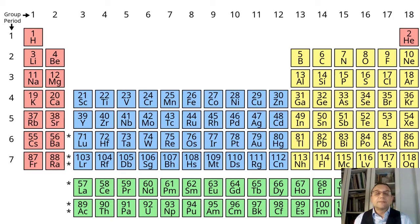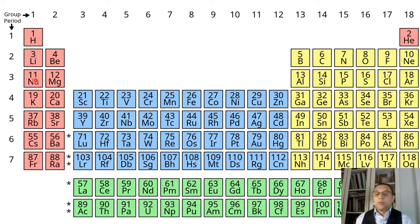All elements are organized by their atomic number. Hydrogen has one proton, therefore the atomic number of hydrogen is 1. Sodium has 11 protons, therefore the atomic number of sodium is 11. Helium has an atomic number of 2 because it has two protons.